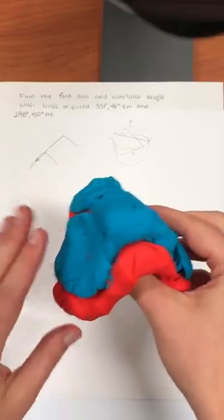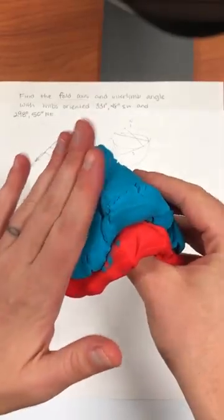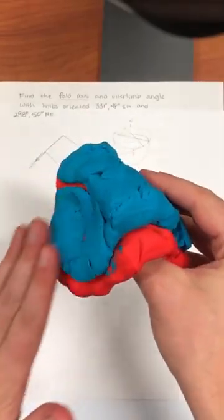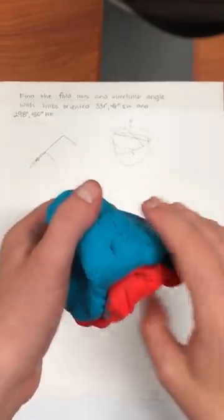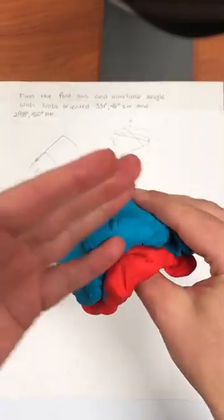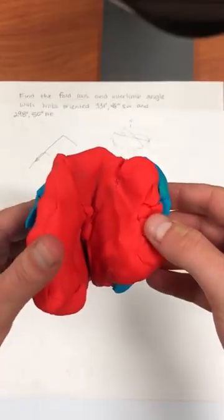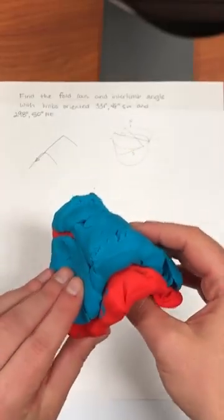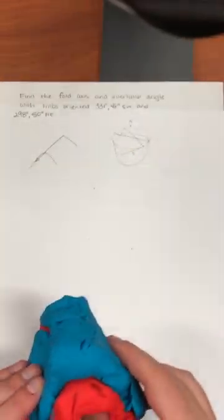So this is what you might end up with. Doesn't look great but you can at least visualize that this limb is dipping this way at this angle, this limb is dipping the other way, and as you move back along the fold you could find where they start to intersect.